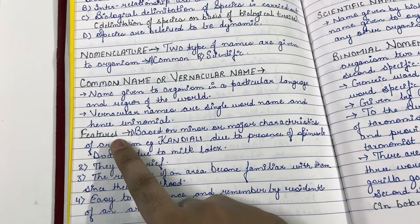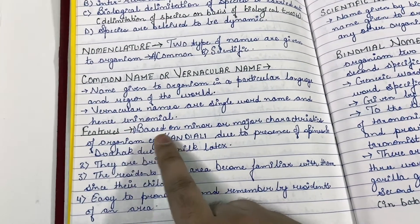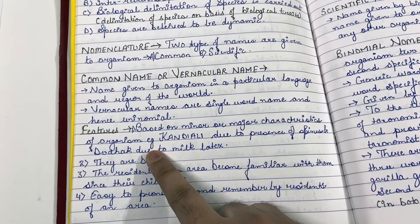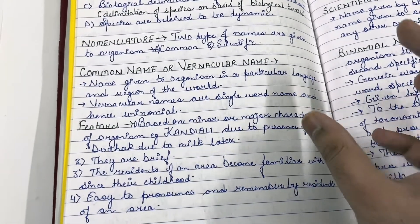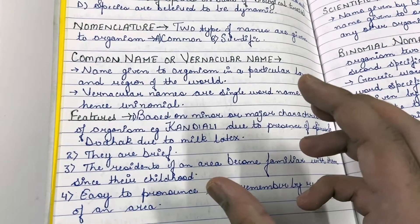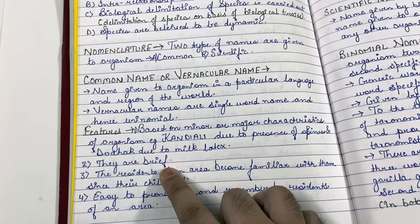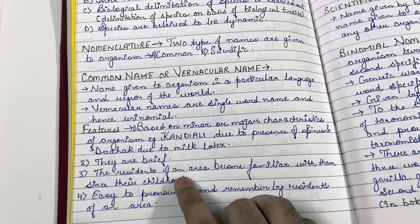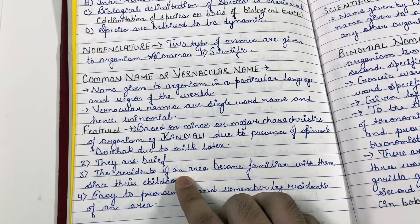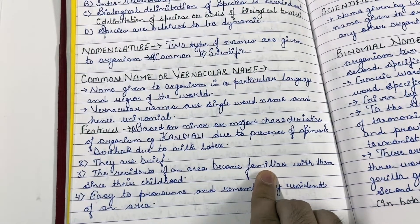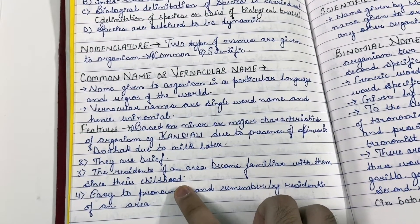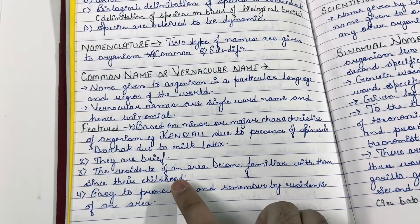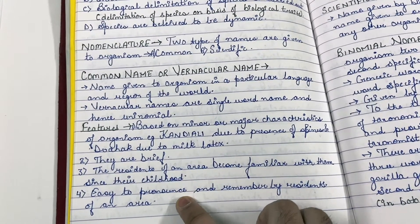What are the features of the common name or local names? Common names are based on major or minor characteristics of the organism. They are generally brief and uninominal. Common names are easy to learn because a person becomes familiar with these names right from childhood — they are easy to remember and easy to pronounce.